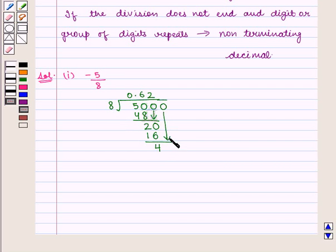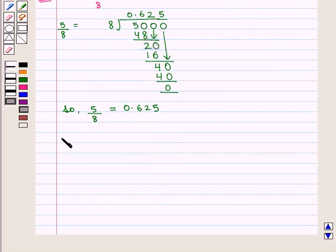And we get 40. Now 40 is greater than 8, and 8 into 5 is 40. So we get the remainder as 0. So we get 5 by 8 as 0.625. Which implies that minus 5 by 8 will be equal to minus 0.625.